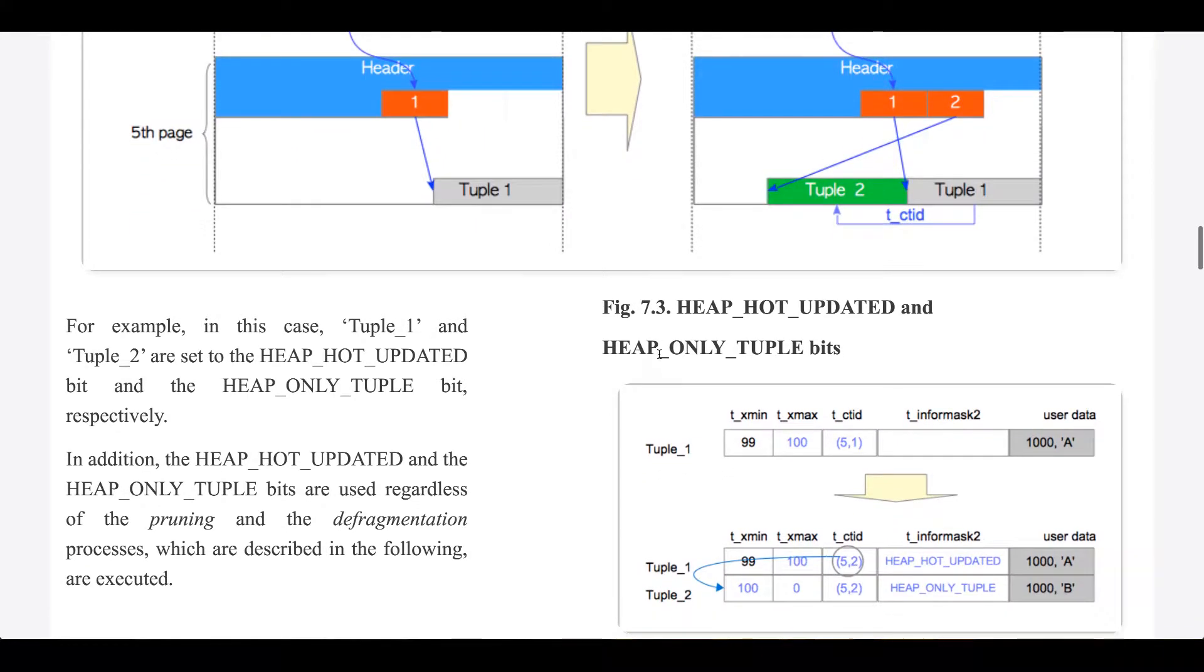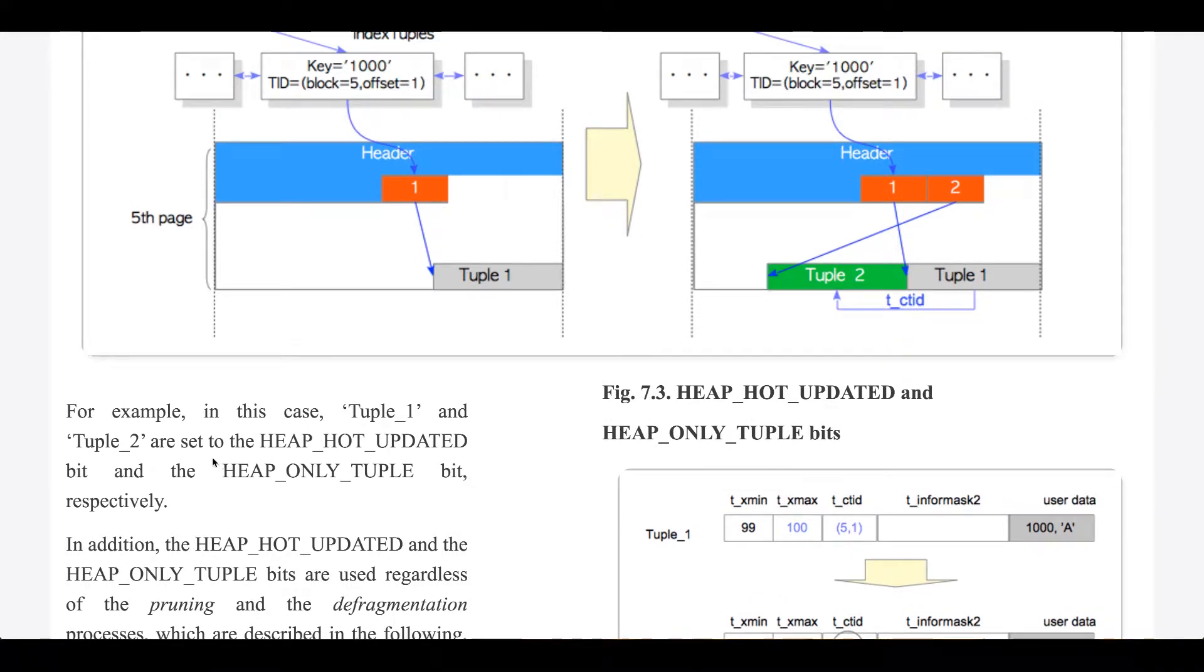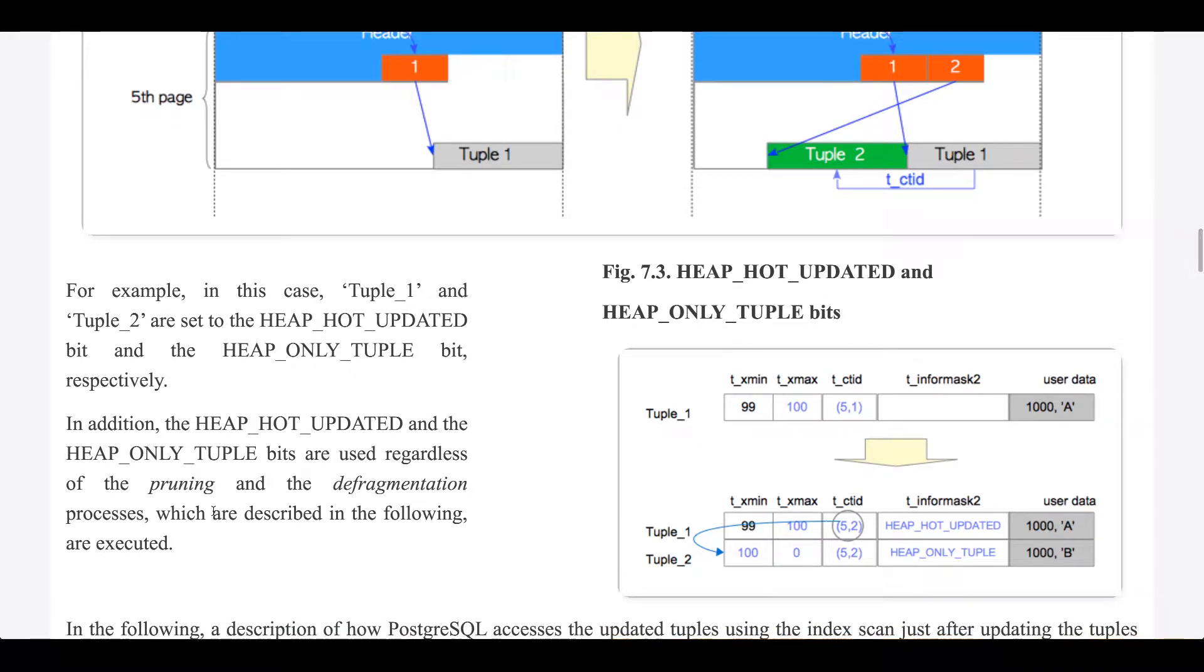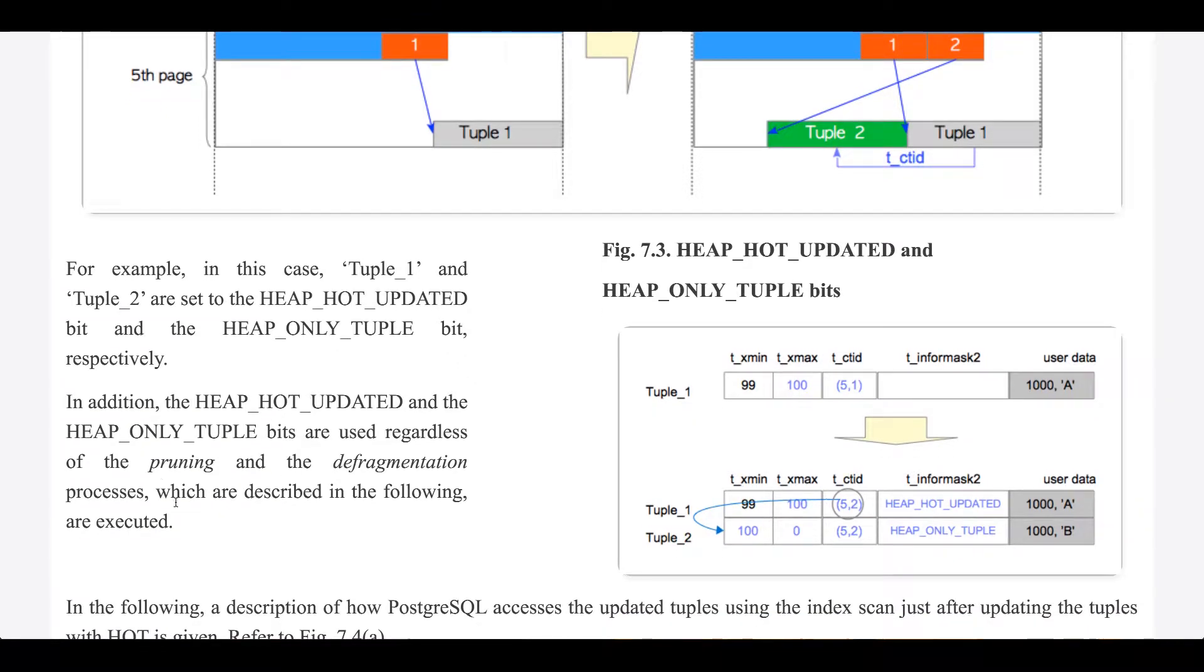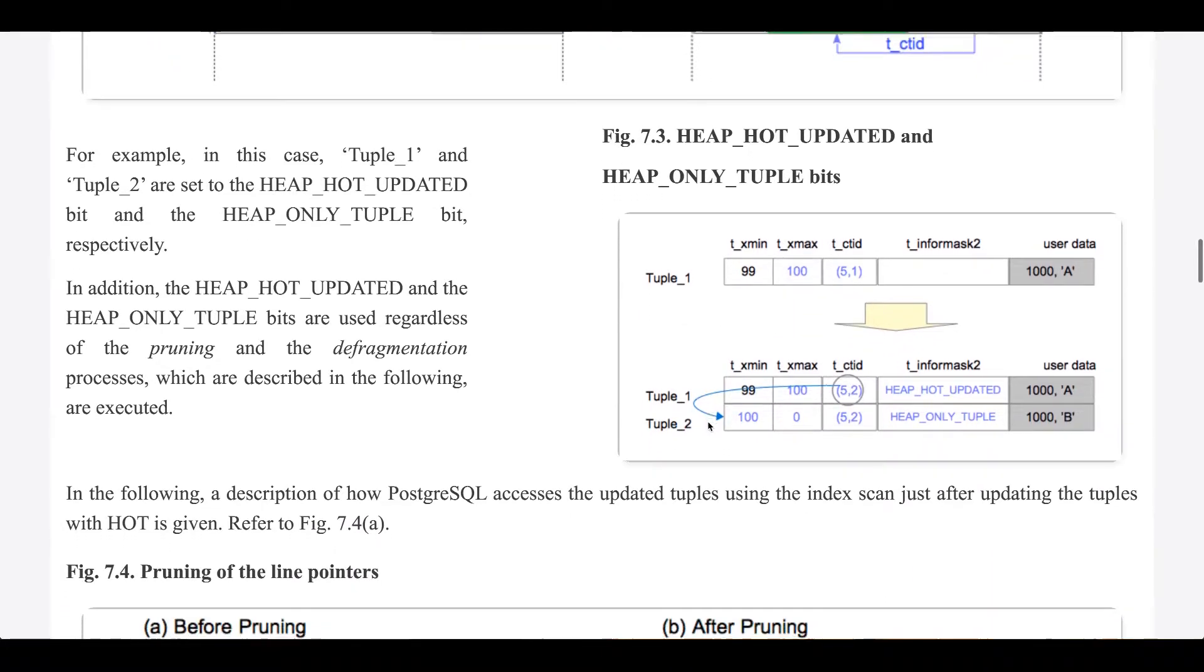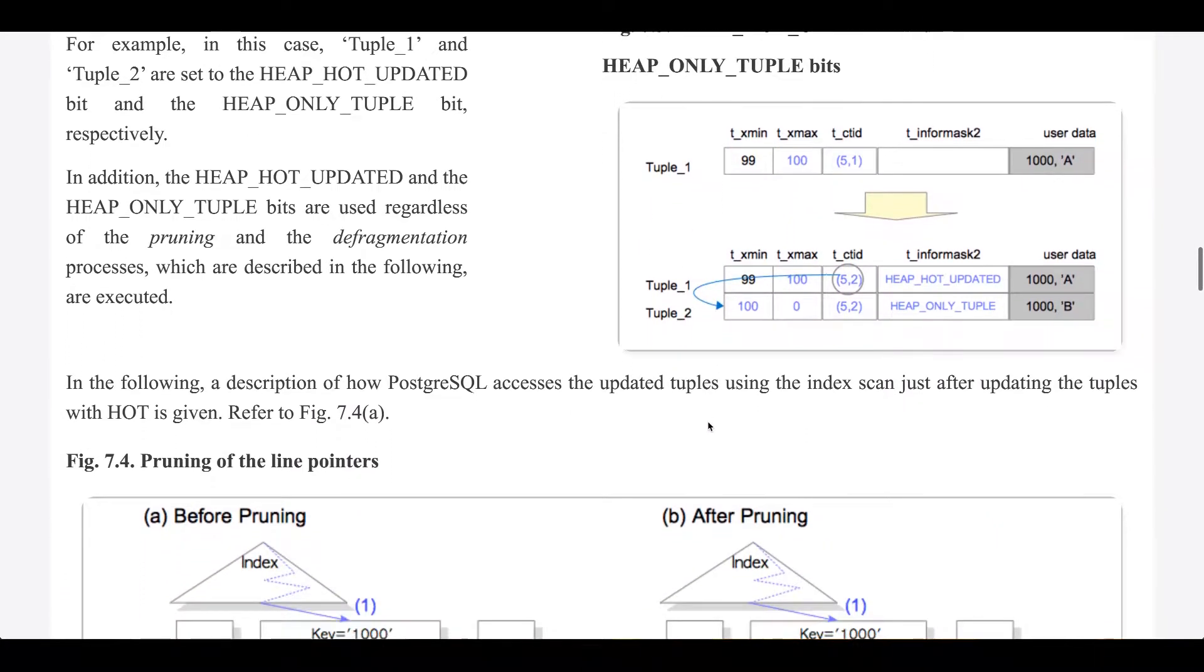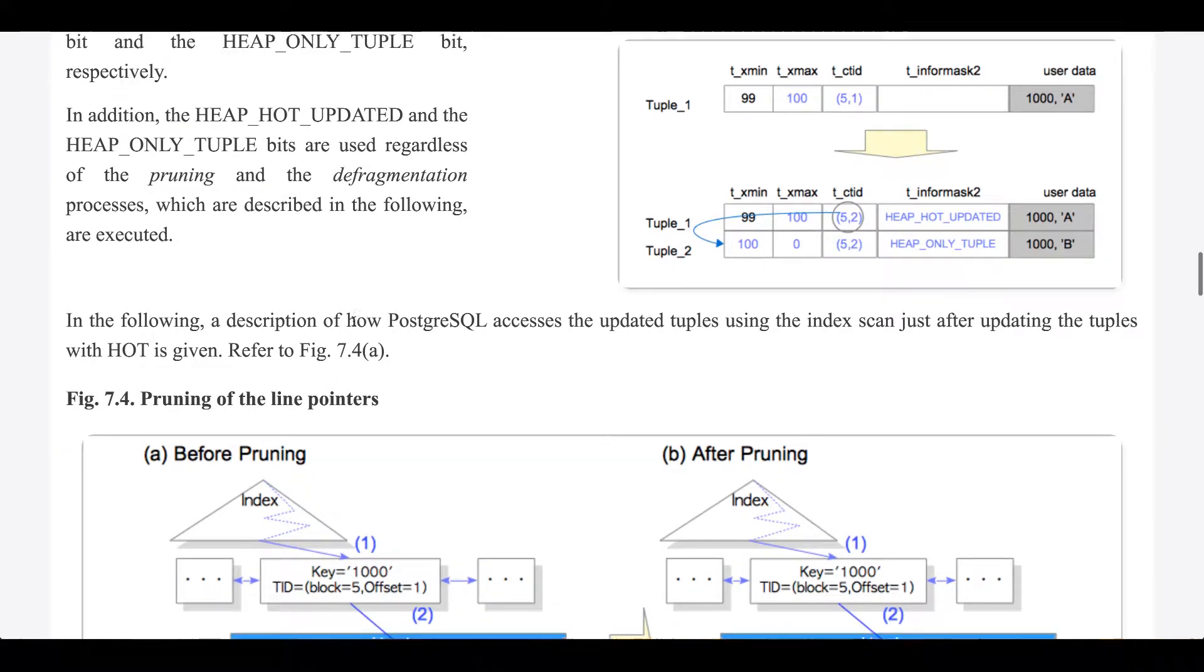For example, in this case, tuple 1 and tuple 2 are set to the heap hot updated bit and the heap-only tuple bit, respectively. In addition, the heap hot updated and the heap-only tuple bits are used regardless of the pruning and the defragmentation processes, which are described in the following.